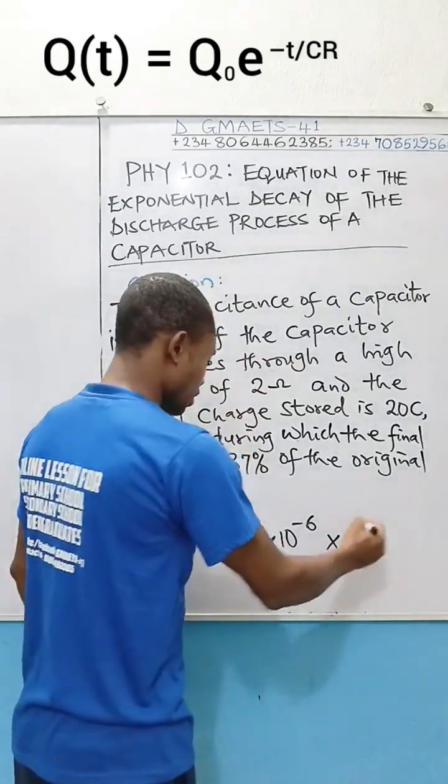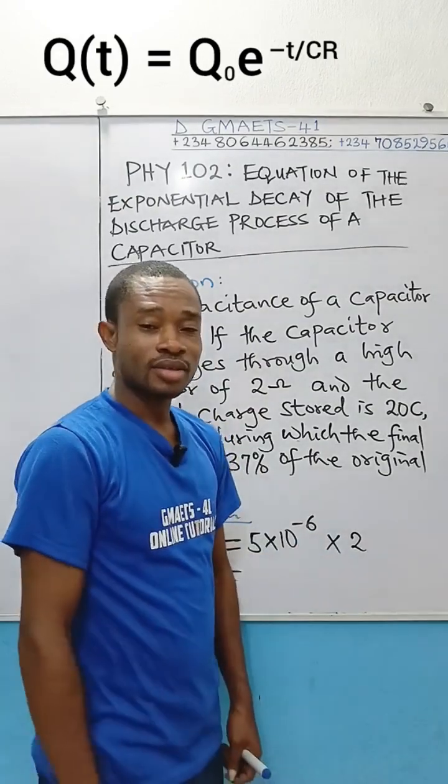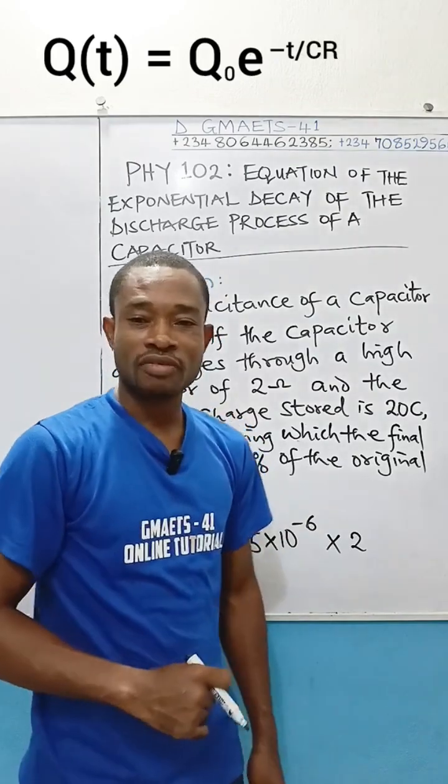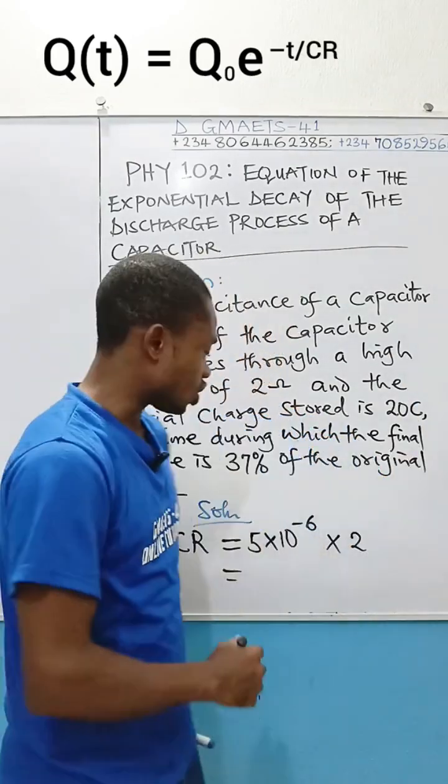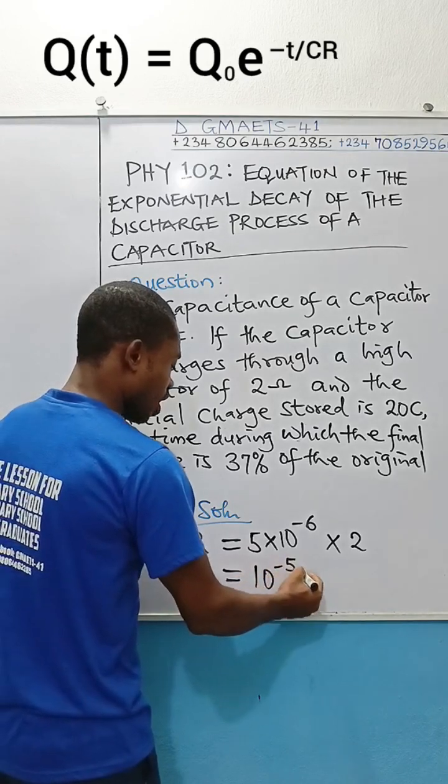Look at it. Then multiply by the resistance. If you work on this, 2 times 5 is going to give you 10. So, we have 10 times 10 to the power of minus 6. Make use of multiplication law of indices. Add the powers of the 10. This is going to give you 10 to the power of minus 5 seconds.